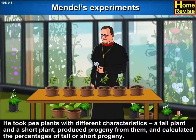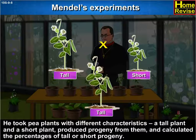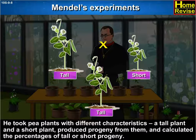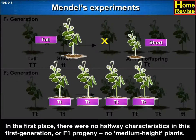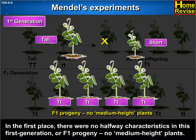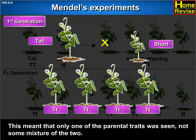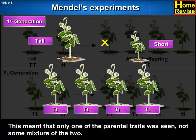He took pea plants with different characteristics. A tall plant and a short plant produced progeny from them, and he calculated the percentages of tall and short progeny. In the first place, there were no halfway characteristics in this first generation, or F1 progeny — no medium height plants. All plants were tall. This meant that only one of the parental traits was seen, not some mixture of the two.